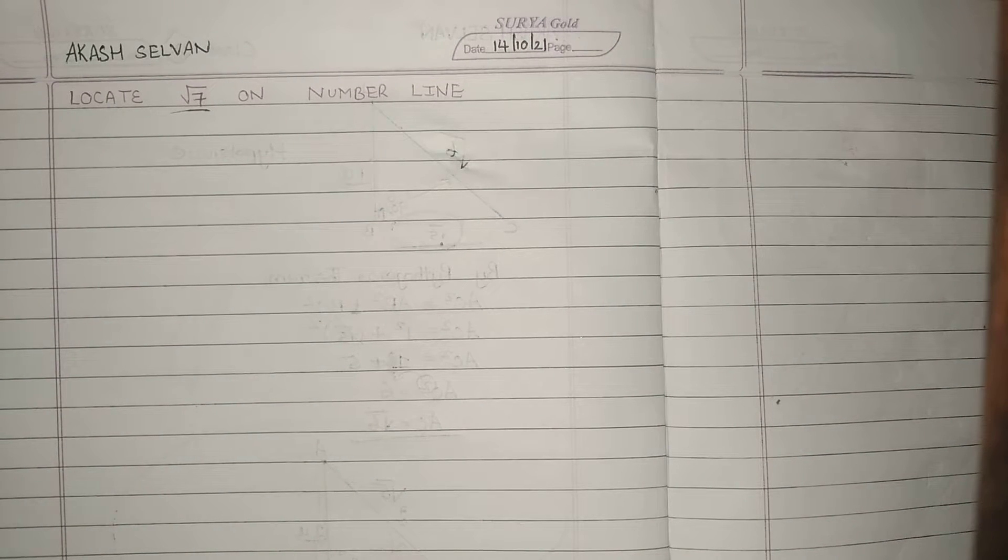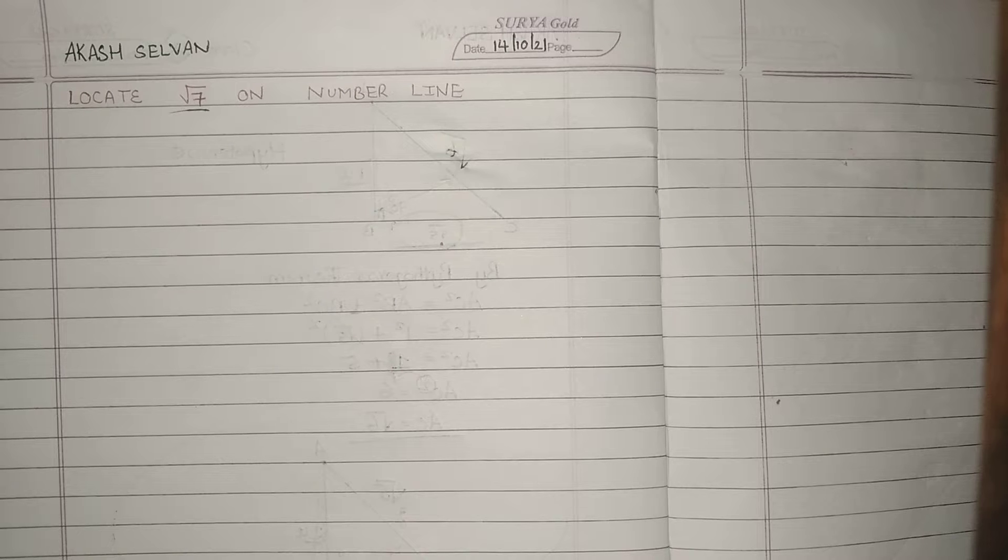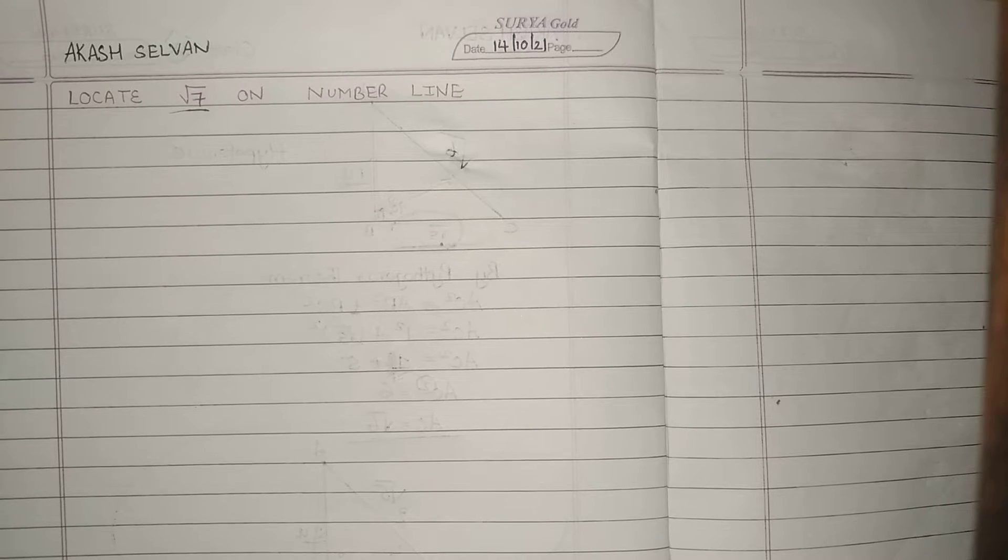Hope you have watched root 6 on a number line video yesterday. Today is the continuation of that. Which concept are we going to use to locate an irrational number on a number line? Everyone knows it is nothing but Pythagoras theorem, isn't it?